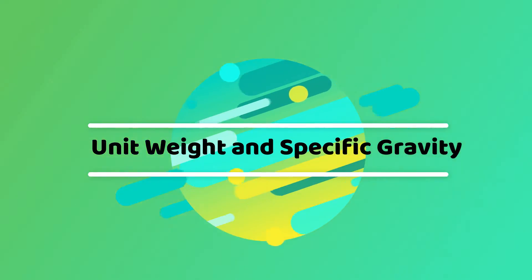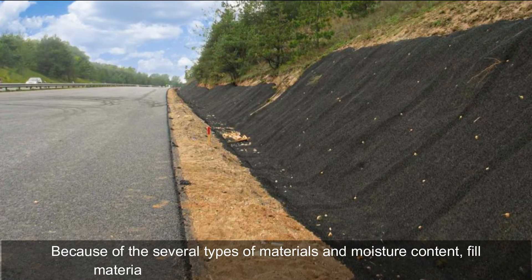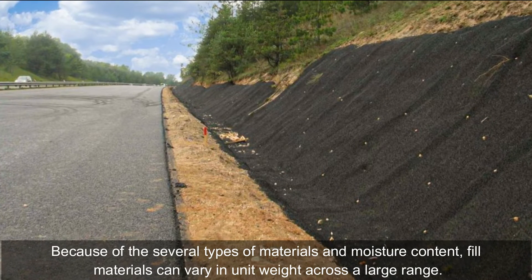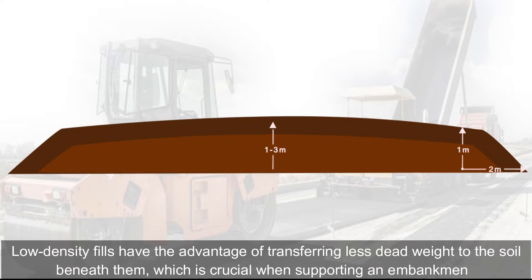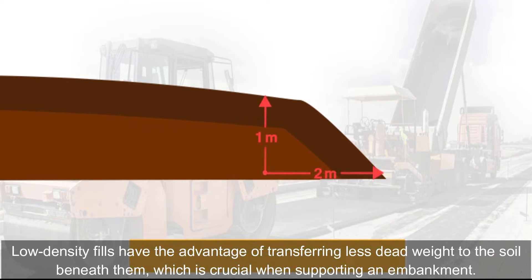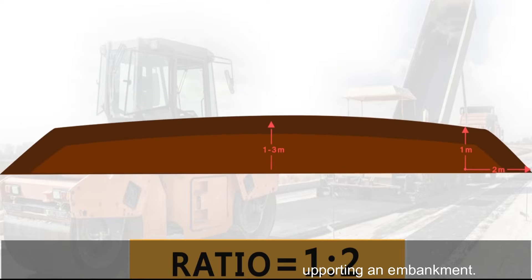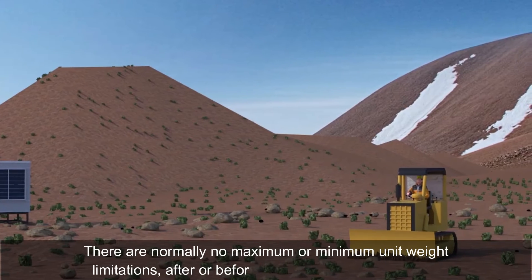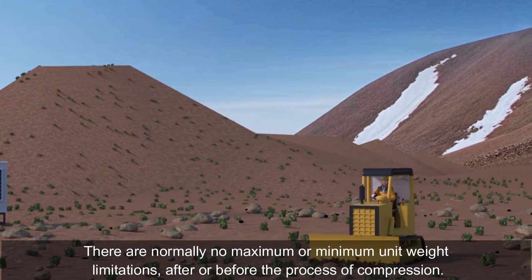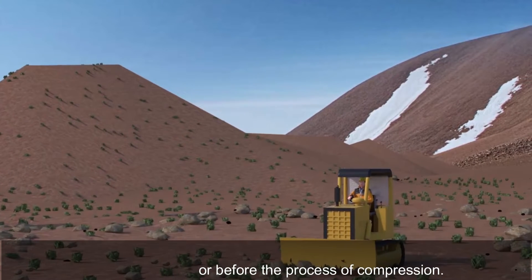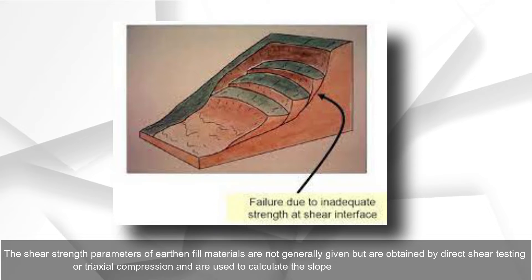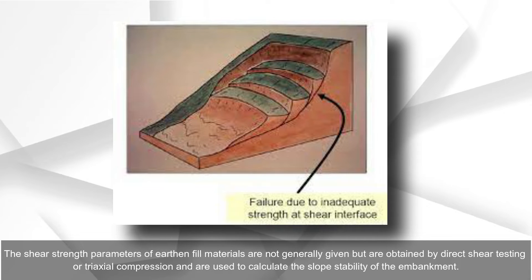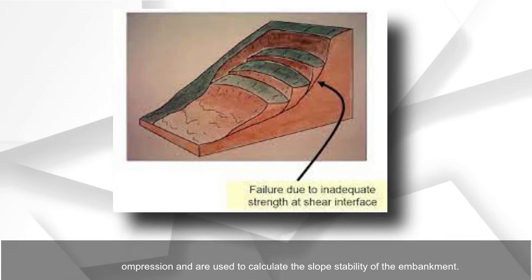Unit Weight and Specific Gravity: Due to the several types of materials and moisture content, fill materials can vary in unit weight across a large range. Low-density fills have the advantage of transferring less dead weight to the soil beneath them, which is crucial when supporting an embankment. There are normally no maximum or minimum unit weight limitations before or after compression. Shear Strength: The shear strength parameters of embankment and fill materials are obtained by direct shear testing or triaxial compression, and are used to calculate the slope stability of the embankment.